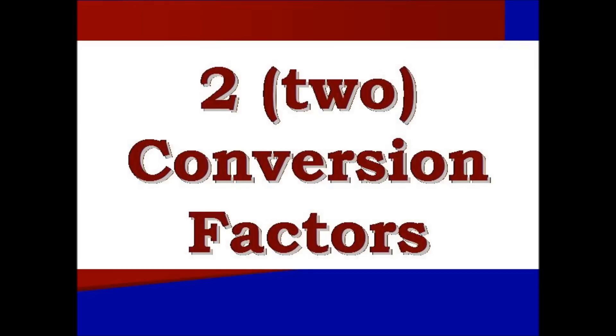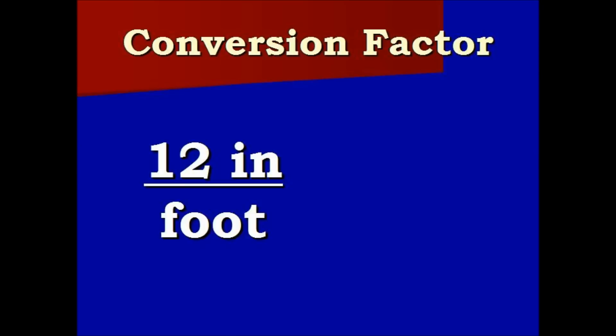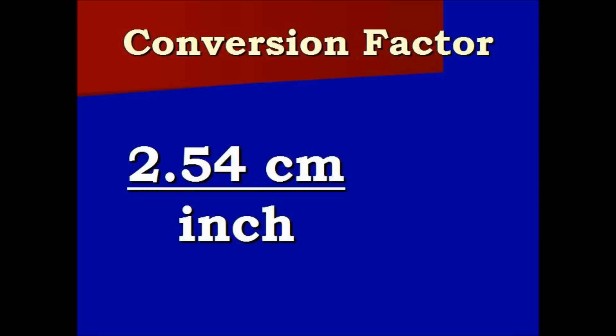So we have two conversion factors that we have to use. Our first conversion factor, one foot equals twelve inches. We're going to turn that into a ratio. Our second conversion factor, one inch equals two point five four centimeters, and we turn that into a ratio.